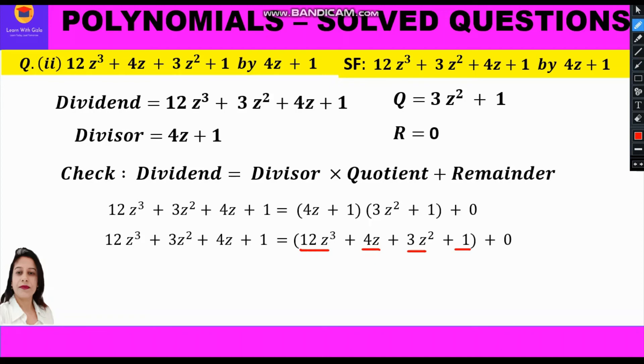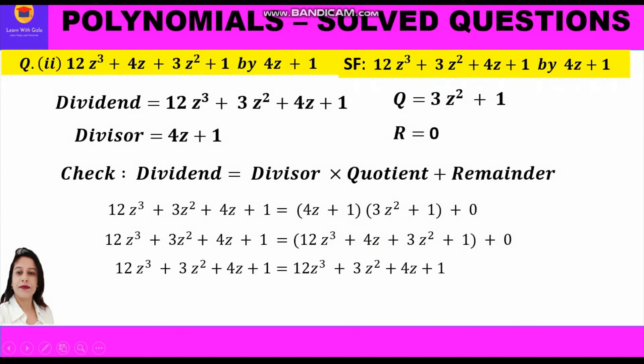Then 1 into 3z² is 3z² and 1 into 1 is 1, plus 0. Simplifying the right hand side gives 12z³ plus 3z² plus 4z plus 1, which is exactly equal to the left hand side. So left hand side equals right hand side, the division algorithm is satisfied, and our answer is correct.